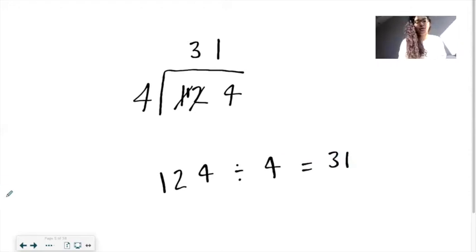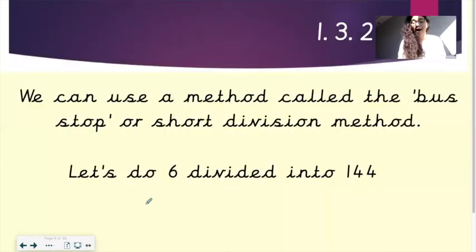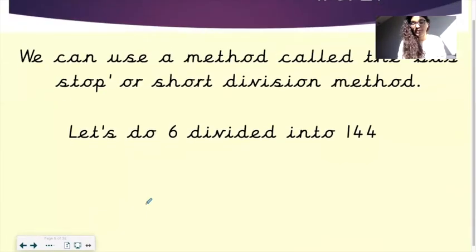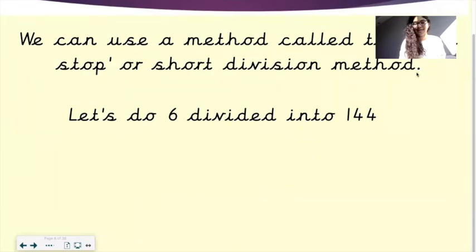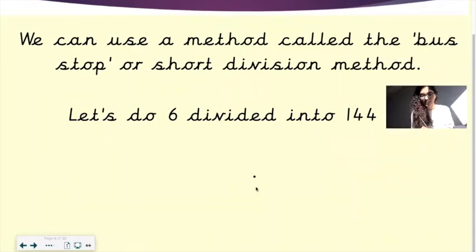We'll try another question together now, which is 144 divided by 6. So I'll just move my camera. I'll write down the question. So the bigger number goes under the bus stop, and then 6 goes on the outside. Now, first number to work with is 1. How many times does 6 go into 1? It doesn't go in that many times. So you carry along the 1, and then you make this 4 into a 14. So cross that out because we're done with that.